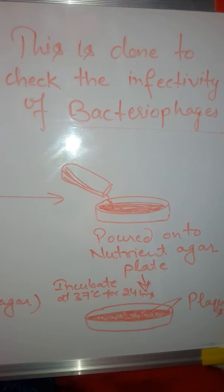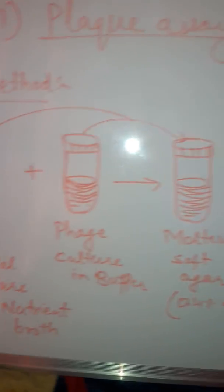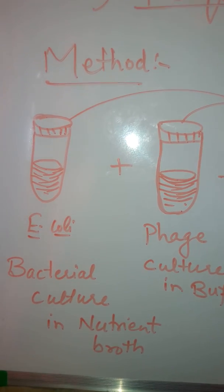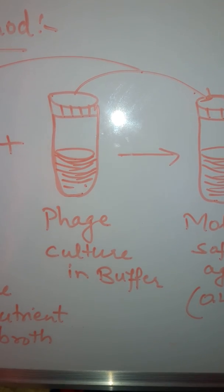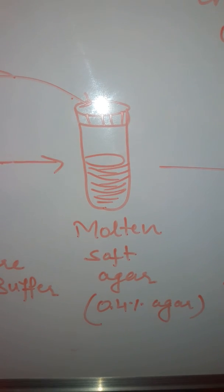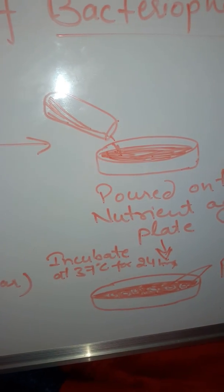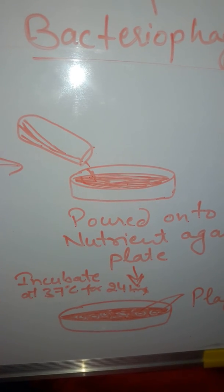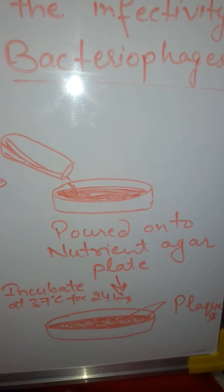Plaque assay is done to check the infectivity of bacteriophages — viruses which infect bacteria. For this method, first we take the culture of bacteria in nutrient broth or peptide water, such as E. coli. Then we take the bacteriophage culture in buffer, mix them together in molten soft agar containing 0.4% agar in 100 ml distilled water, pour the mixture into a nutrient agar plate, and incubate at 37°C for 24 hours.